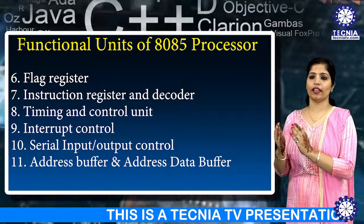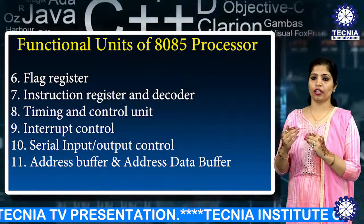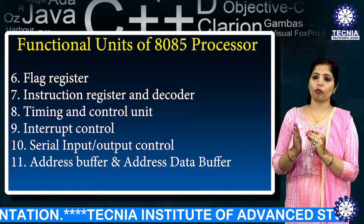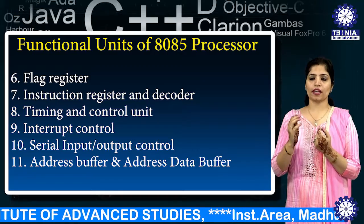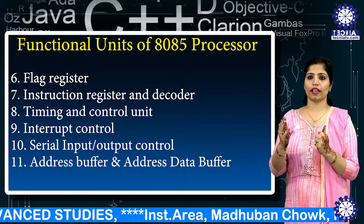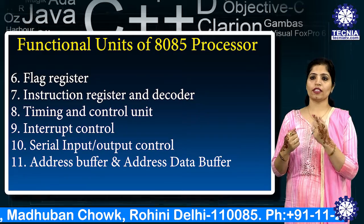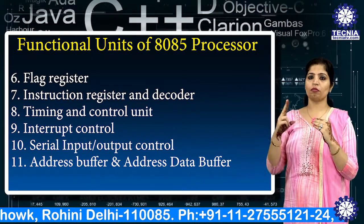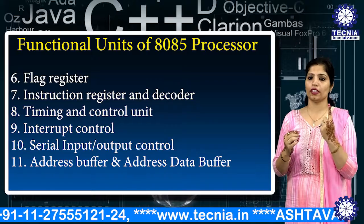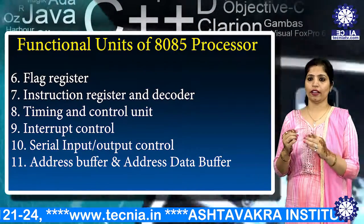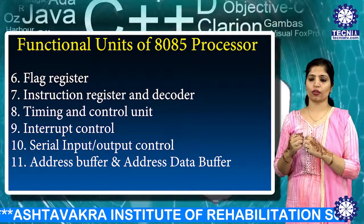The next function is the address buffer and address data buffer. The content stored in the stack pointer and program counter is loaded into these buffers to communicate with the CPU. The memory and input-output chips are connected to these buses, so the CPU can exchange data with the memory and I/O chips. The address bus and data bus are the final functional units: the data bus is bi-directional and carries data, while the address bus is uni-directional and carries memory locations.